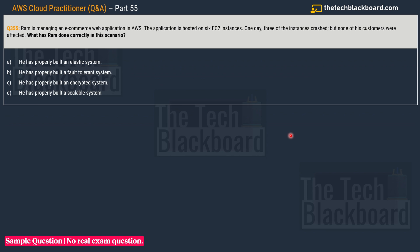Question 355: Mr. Ram is managing an e-commerce web application in the AWS cloud. The application is hosted on six EC2 instances. One day, three of the instances crashed, but none of his customers were affected. What has Ram done correctly in this scenario? This question will help you learn a point or two about good architecture.